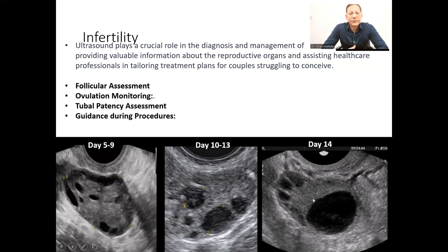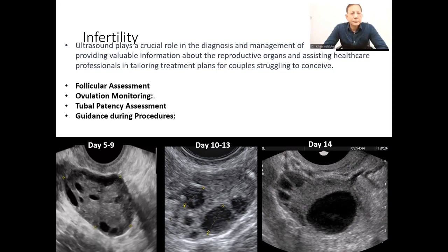Then they observe on the 15th and 16th day whether ovulation has occurred or not. Ovulation means the rupture of the ovarian follicle, because the egg is within the follicle. The follicle has to rupture to release the egg for fertilization. This information is important for couples trying to conceive, as it helps identify the most fertile period, since the egg or ovum only lives for 24 to 48 hours — meaning one to two days is the only fertile period.